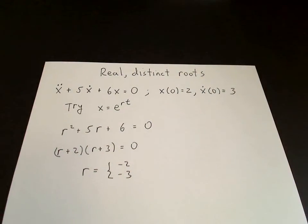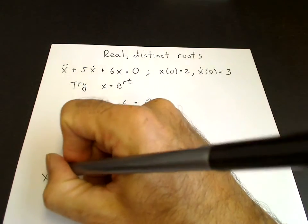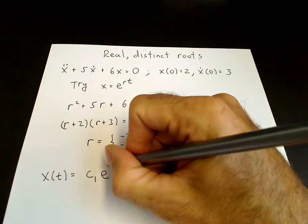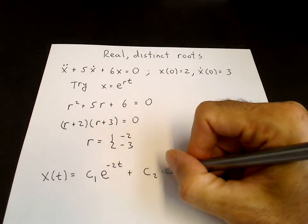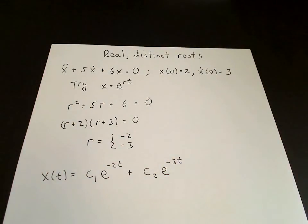So we apply the principle of superposition, so we can write x(t) = c₁e^(-2t) + c₂e^(-3t). So that's the general solution to the differential equation.